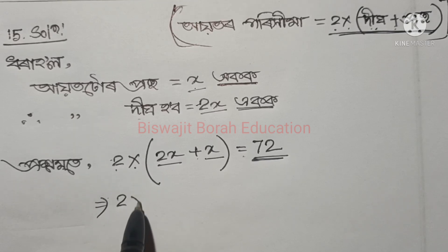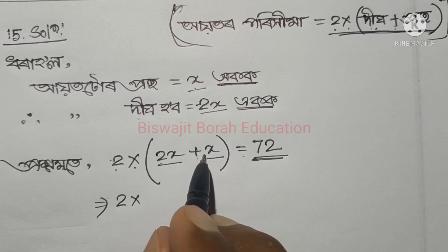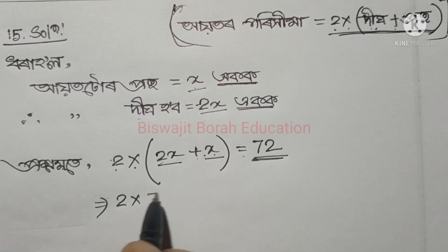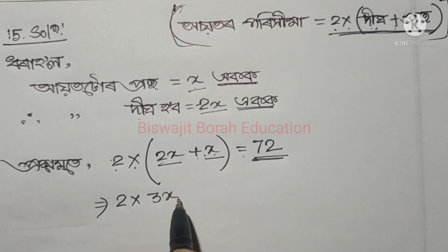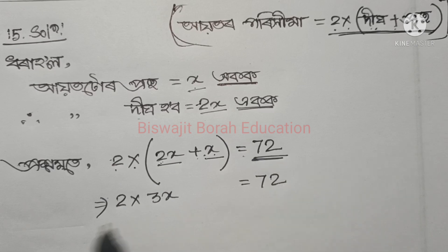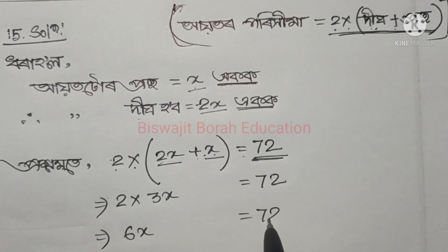It is 2 into twice x and 1x. So twice x, 1x, trice x equal seventy two. So it is porihima - 2g nigun 6, 6x equal 72.